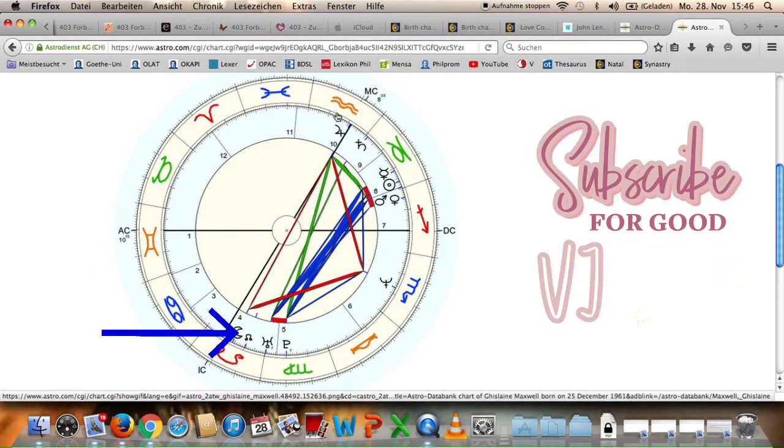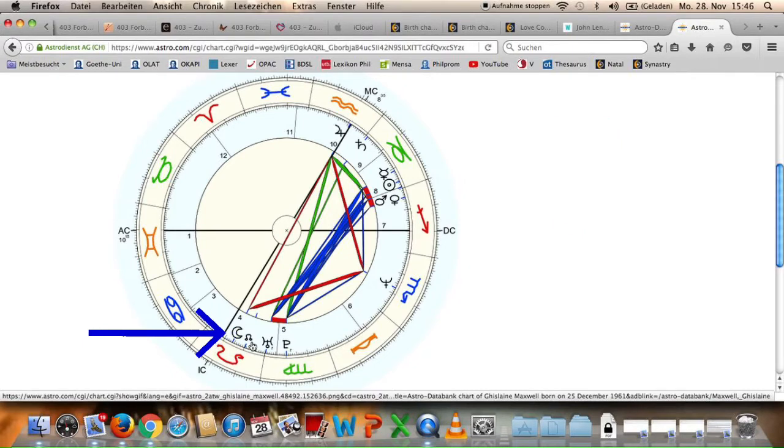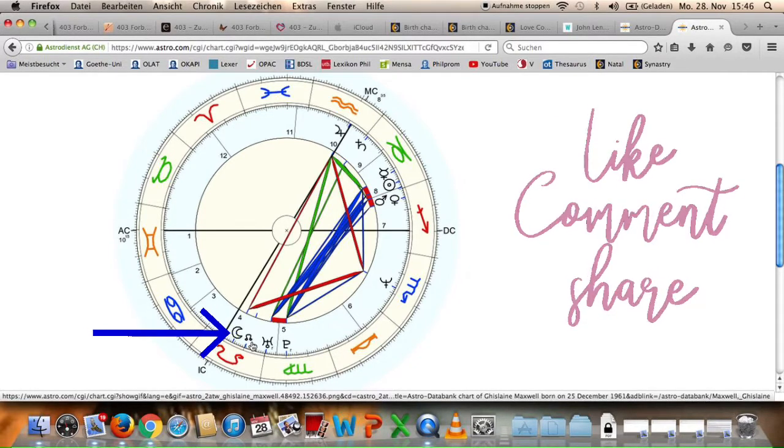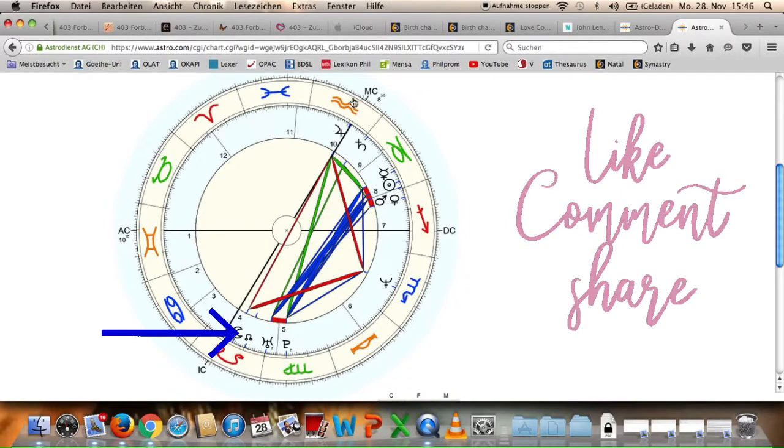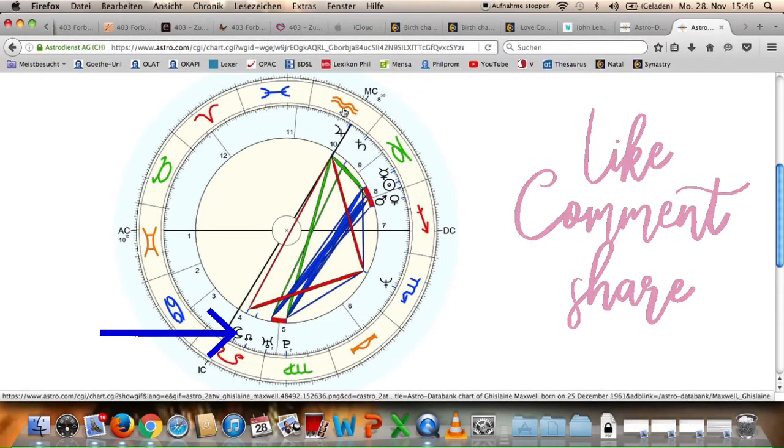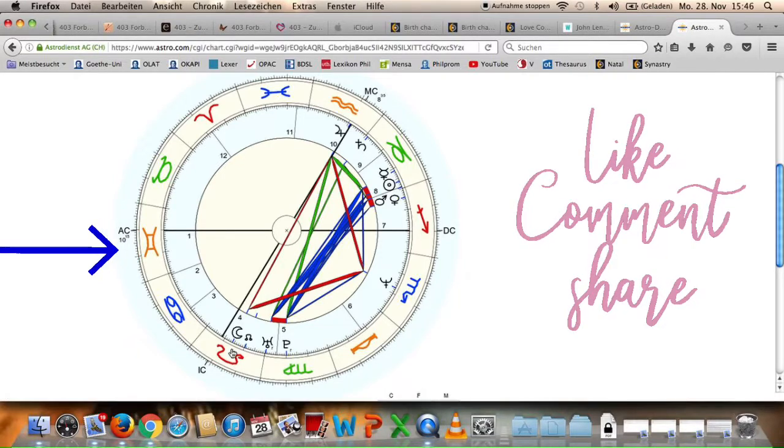With this combination with the south node in Aquarius, she may have been seen as one of them. Her father did not treat her that well. She was not the star of the family, but she really longed to be the star. She wanted to have something that is her own. And that is even stronger when we see that she has the moon in Leo.